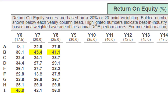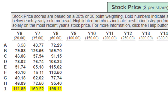For return on equity, everyone met expectations — I believe this is the first time this has ever happened, even counting the practice rounds. Company B is leading at 41.1, company E is at 38.2, and company I is not far behind at 36.9 — so it looks like company E may be making a run for it too. For stock price in year 8, everyone met expectations again. Company I is leading at 198 and company B is not far behind at 159.